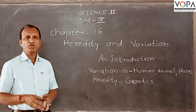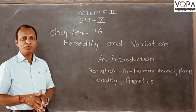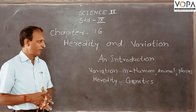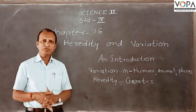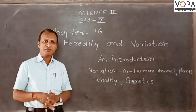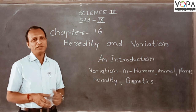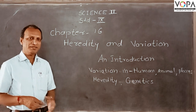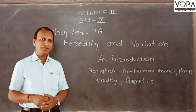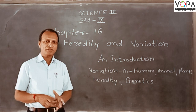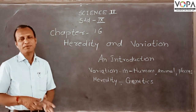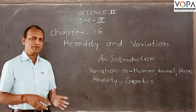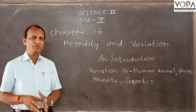In sexual reproduction, there are more chances of variation. Variation is the boon of nature. We can identify organisms with the help of their variations and similarities. The variation and similarity among organisms is the base of classification.